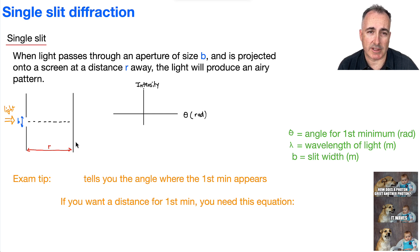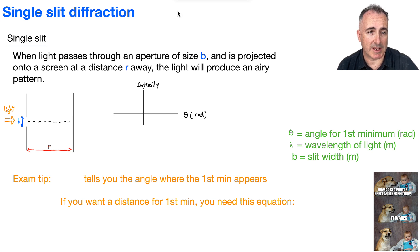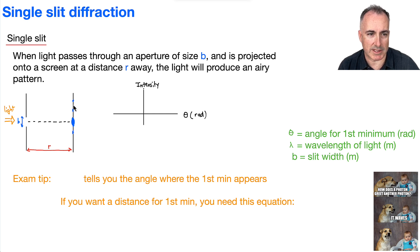This light is going to produce a very specific pattern. The light is going to be interfering with each other in constructive and destructive ways, and it's going to end up making this kind of pattern. If I tried to draw it, we would see a really bright dot right here in the center — really bright and quite wide. After that we'd see slightly less bright ones on each side.